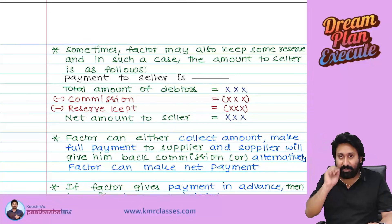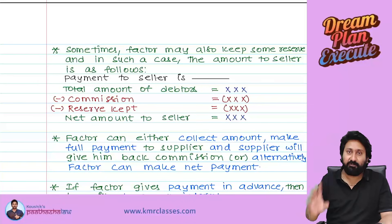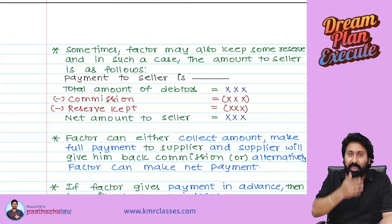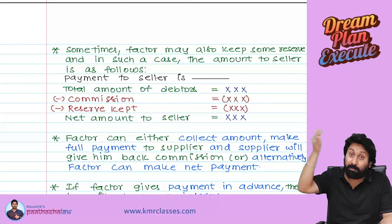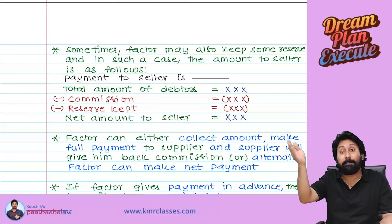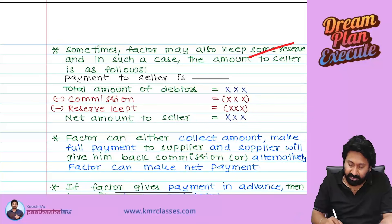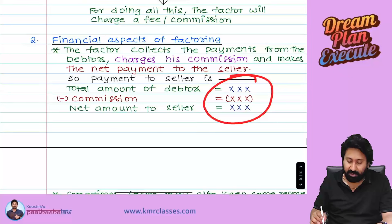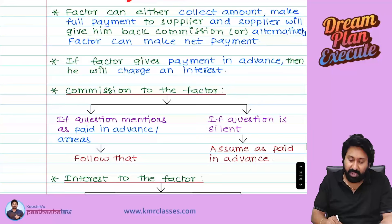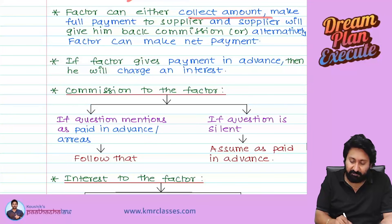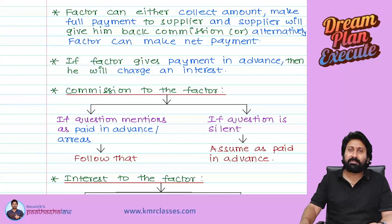For example, on five lakh, 70% comes to three lakh fifty — that is paid as an advance today. The remaining one lakh fifty is kept as reserve and paid at the end. So when a reserve is kept, the net amount to the seller = Total debtors minus commission minus reserve. The factor can either collect and make full payment or pay in advance — this will be specified in the question.